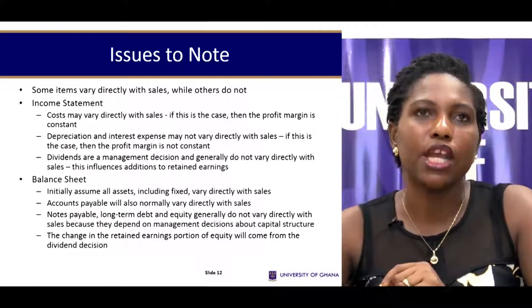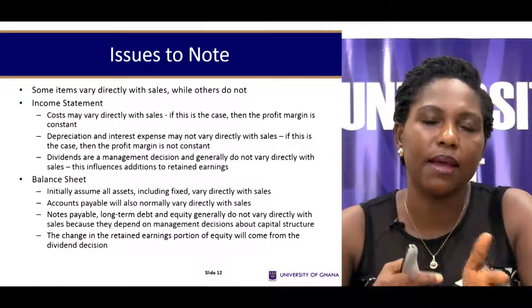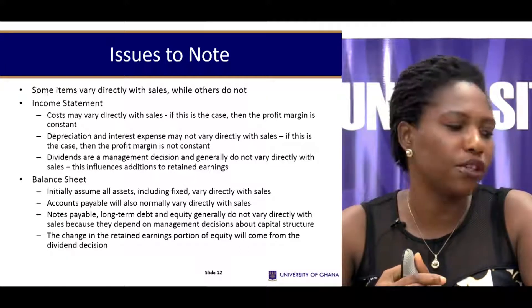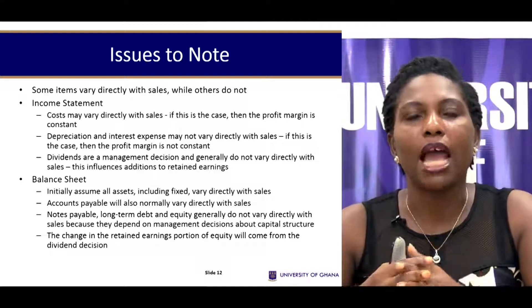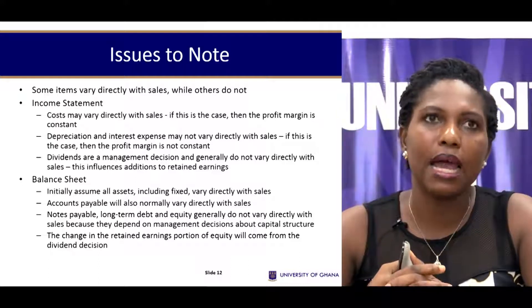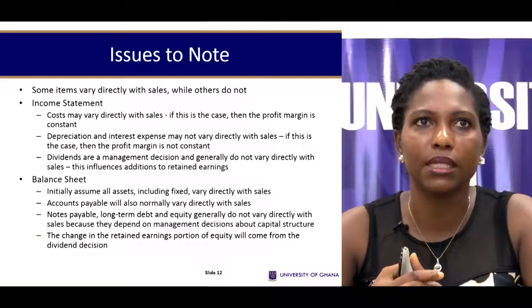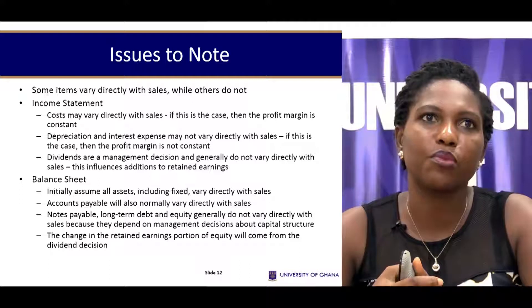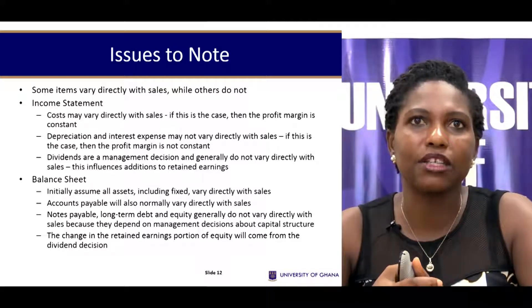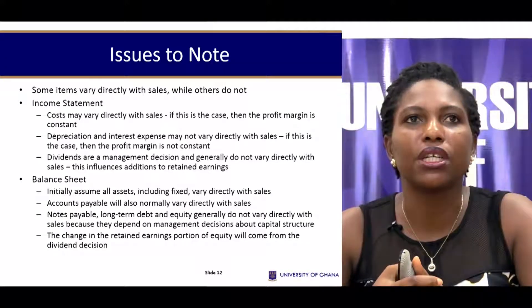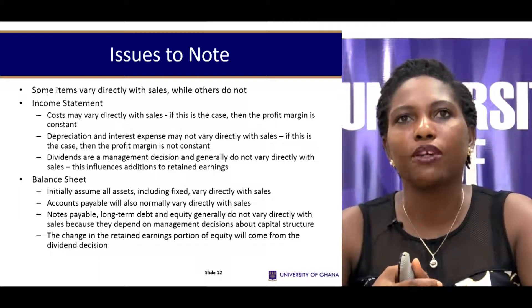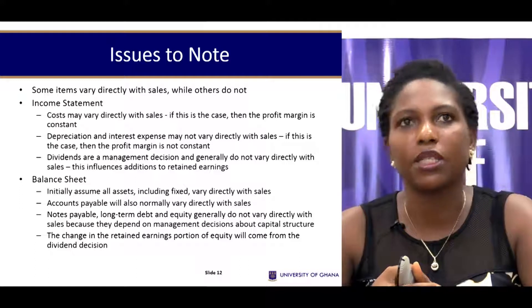Some important issues to note: in constructing the forecasted financial statements — the income statement and the balance sheet — not every item varies with sales. Typically within the income statement, most things do vary with sales. When it comes to costs, especially direct costs, most of them vary directly with sales, so profit margin is usually constant. Depreciation and interest payments may not necessarily vary directly with sales because depreciation is related to the asset base of a firm, and interest payment is related to the debt or loan amount. If the loan amount is not changing by the same magnitude as estimated sales, then we do not expect interest payments to vary accordingly.